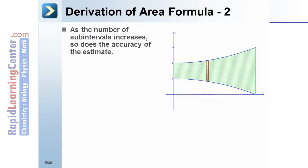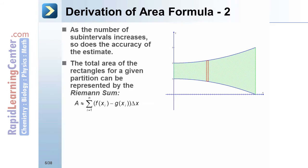As the number of subintervals increases, so does the accuracy of the estimate. The total area of the rectangles for a given partition can be represented by the Riemann sum: A ≈ Σ(i=1 to n) [f(x_i) - g(x_i)]Δx.